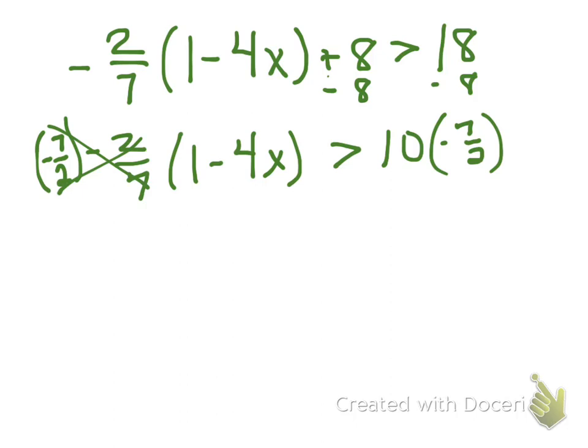So on this side, it's gone. And I've multiplied both sides by a negative. So I'm back to that golden rule of inequalities. I've got to go ahead and flip my symbol. And I'm just left with one minus four X over here.